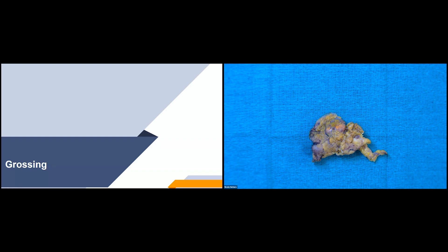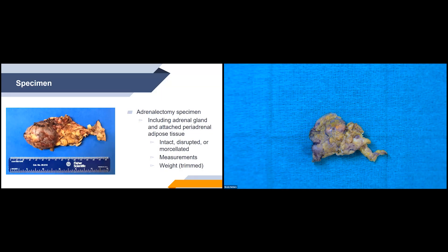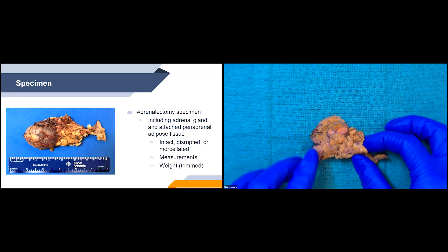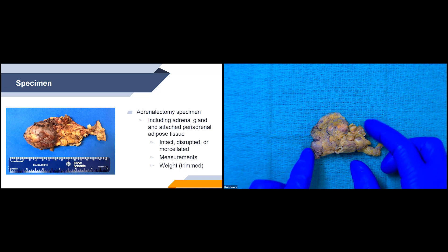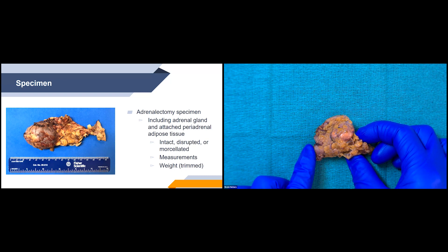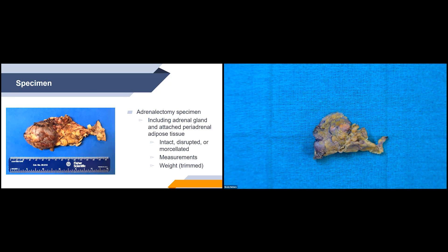Now we'll go through the grossing steps, which would be the same for any of these pathologies. We'll identify our specimen, main findings, additional findings, ink code, and section code. The specimen is an adrenalectomy, including the adrenal gland and attached periadrenal soft tissue. We'll state if it's intact, disrupted, or morselated, and give three-dimensional measurements of the adrenal gland and the attached periadrenal soft tissue. We'll also give the weight trimmed — the weight of just the adrenal gland and mass with the periadrenal soft tissue trimmed off.